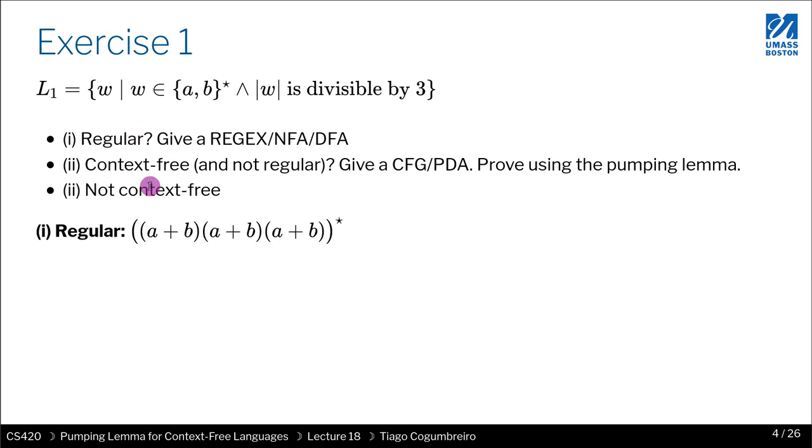The language is in fact regular, and it can be given by the following regular expression where I first read an A or a B, and I do that three times, and so that gives me any word of length three, and I do that either zero or more times, which means I'll get a multiple of three or zero. So the answer is this regular expression, and I give you as homework to try to do the equivalent DFA and NFA from this regular expression.